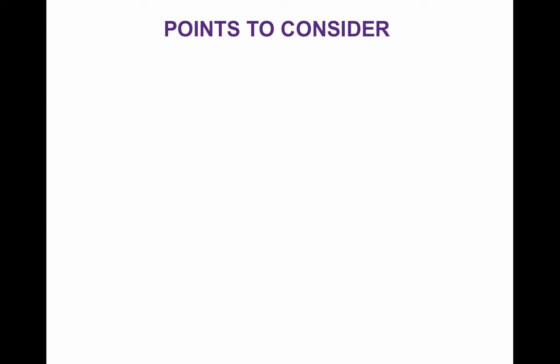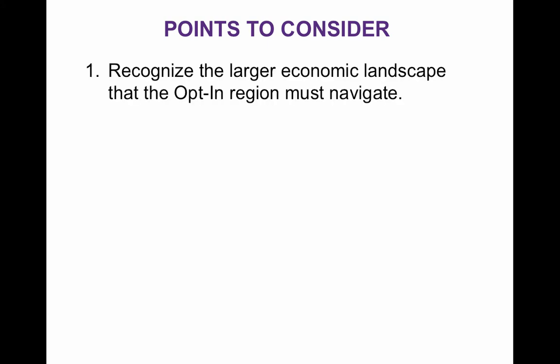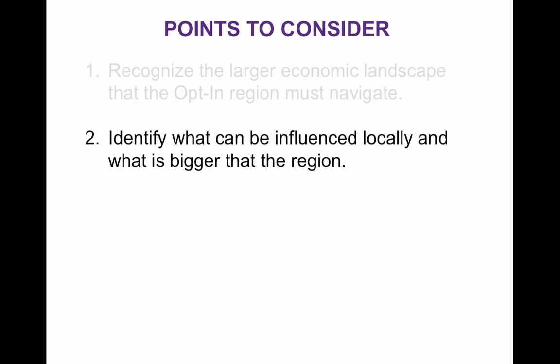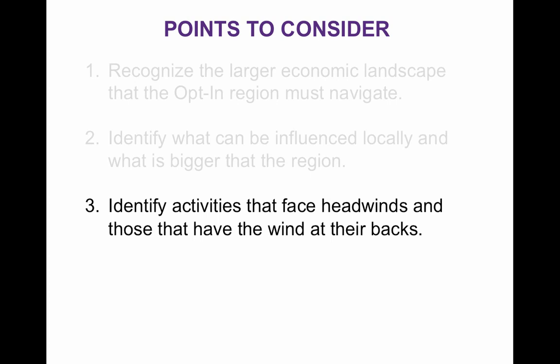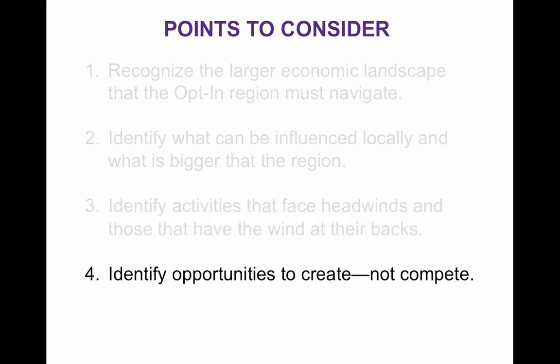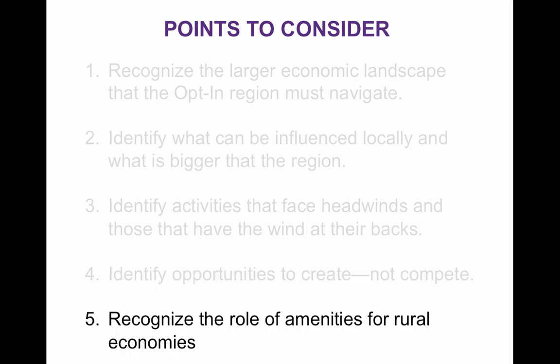To close, let's provide some key things to consider when deciding how to move forward. First, it's important to recognize the larger economic landscape that the Optin region must navigate and how the region fits into that landscape. This requires identifying what can be influenced locally and what is beyond our control, as well as identifying activities that have wind at their backs versus those facing headwinds. For rural areas, the future rests on identifying opportunities to create economic activity, not compete for it. And it's important to recognize the role of amenities for rural economies.